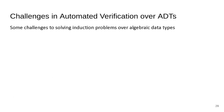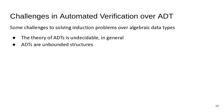Some challenges for automated verification over algebraic data types: the theory of ADTs is undecidable in general because ADTs are unbounded structures. If you were to use Z3 and try to prove a universally quantified formula over an algebraic data type, it would end up enumerating all possible lists, which it can't do because there are infinitely many.